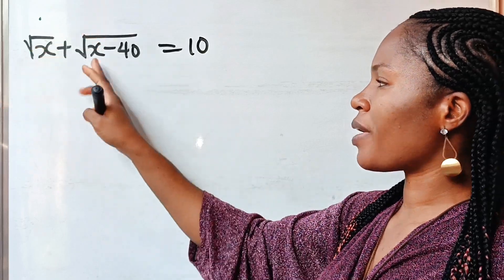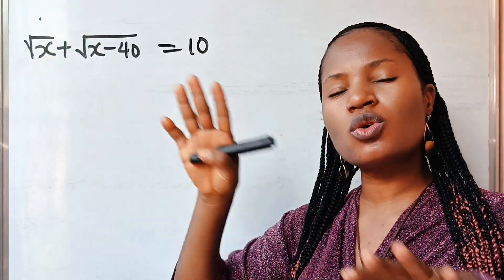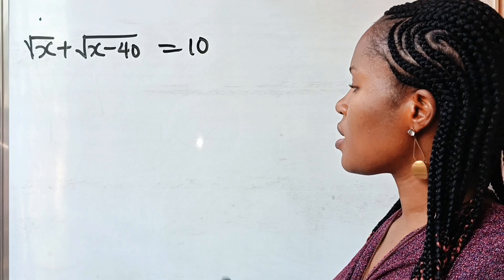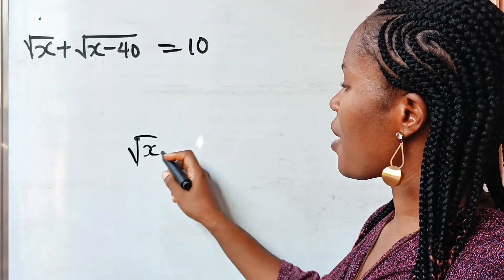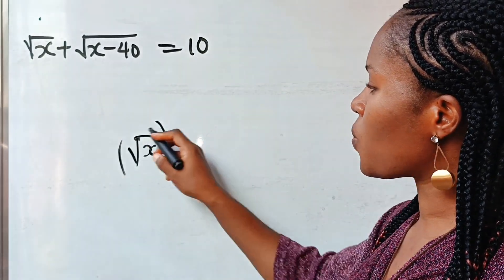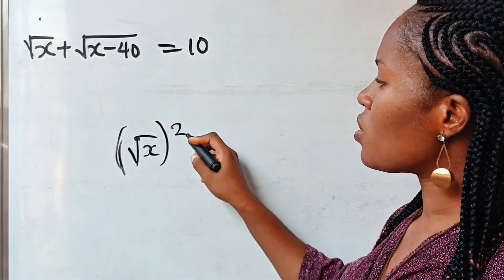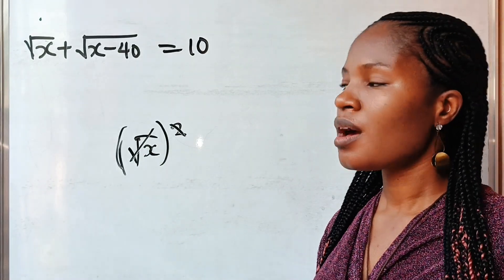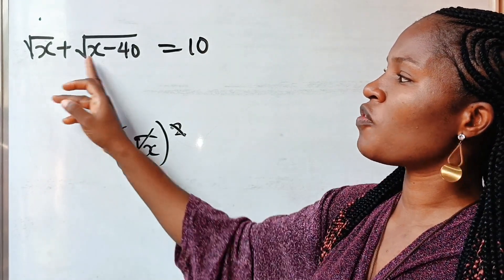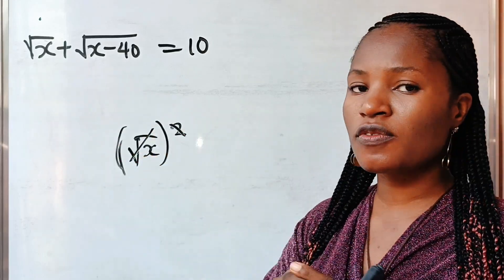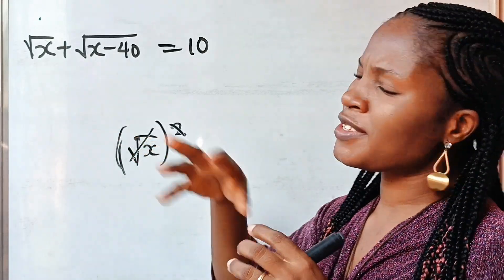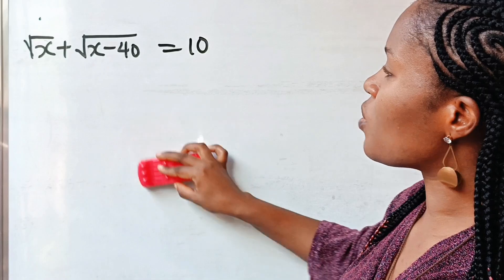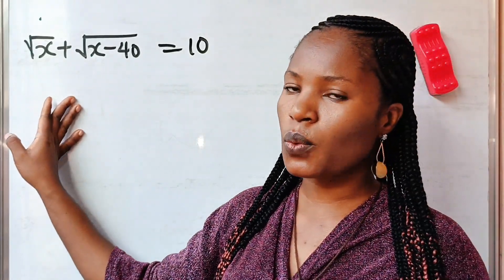Now, because we have square root and we have square root, the only way to clear a square root is to square it. So if you have square root of x and you want to cancel this square root, just square it. Once you square it, the square cancels your square root sign and you have your x. Remember that our intention is to remove any obstacle that is preventing us from getting our x. So let's first remove that square root sign by squaring both sides of this equation.